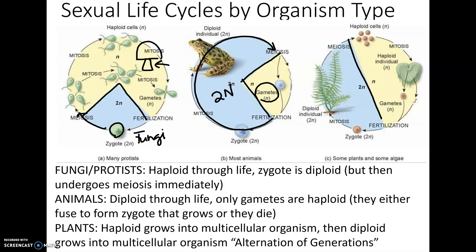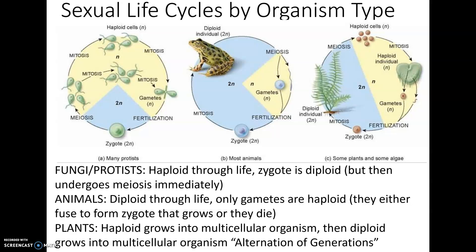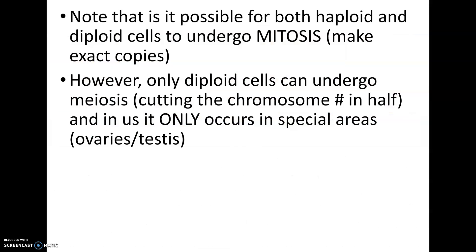Some plants have what's called an alternation of generations, where about half of their life cycle is spent as haploid and half as diploid. Not every organism has the same sexual life cycle — they all have meiosis and fertilization somewhere, but they don't all spend the same proportion of their life in the diploid or haploid state. It is possible for both haploid and diploid cells to undergo mitosis, since mitosis simply makes exact copies.